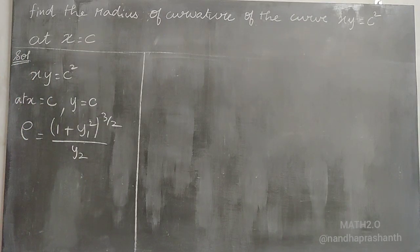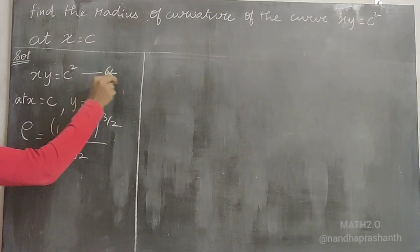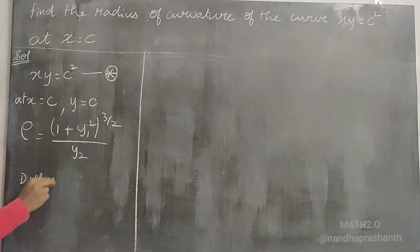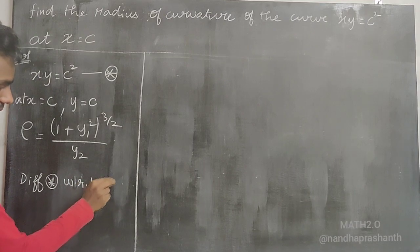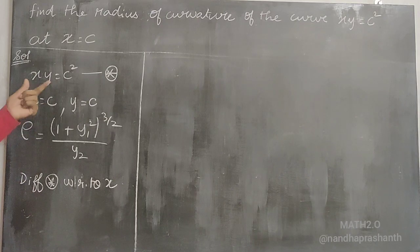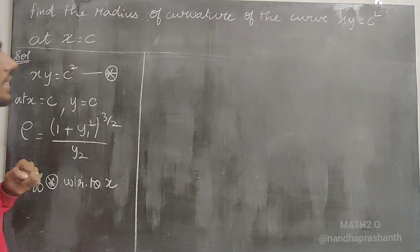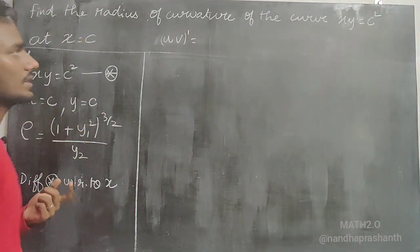We need y₁ and y₂ at the point (c, c). To find y₁, differentiate the curve xy = c² with respect to x using the product rule: uv' + vu', giving x·(dy/dx) + y·1 = 0.